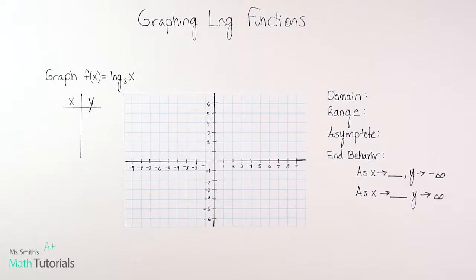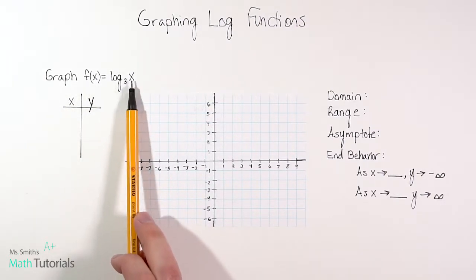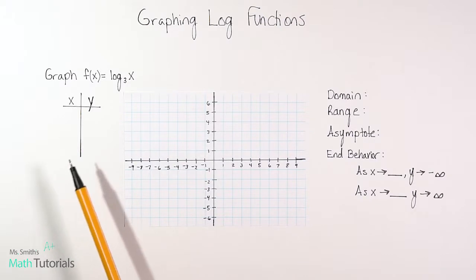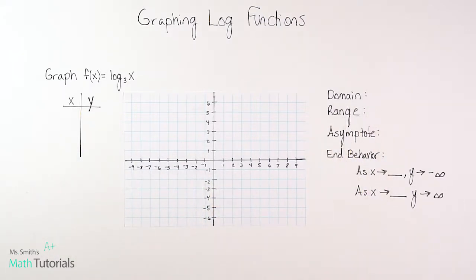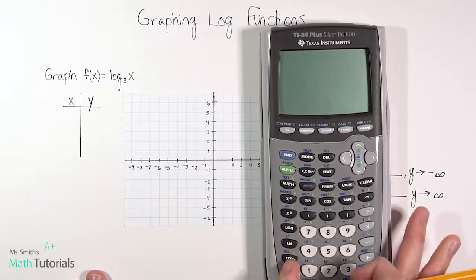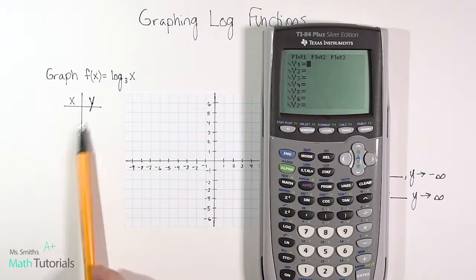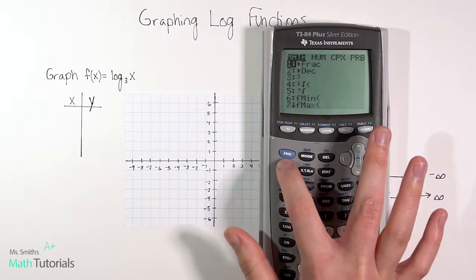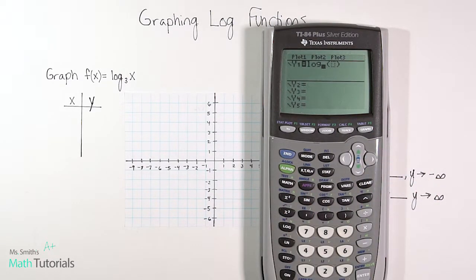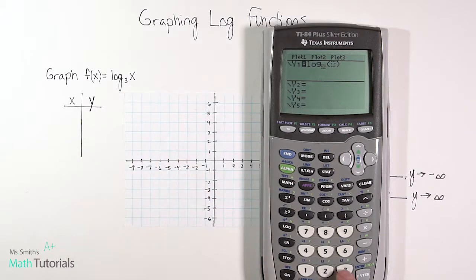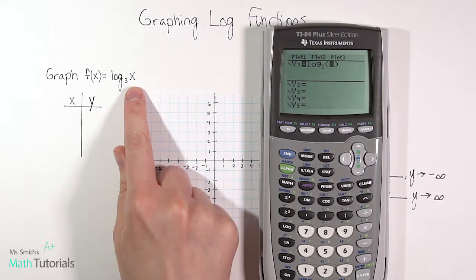For this first example, they say to graph f of x equals log base 3 of x. I'm going to show you the steps of how to do a table, graph it, and answer some characteristic questions about the graph. To start, pull out your graphing calculator and go to y equals so we can type in this equation. A trick I like to use is hitting math alpha math — that's going to pull up the log function. So log, you can put in your base: we're going to put in 3, and then in the parentheses we're going to put x.